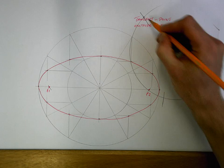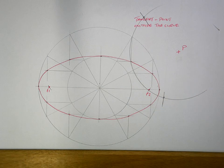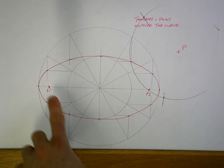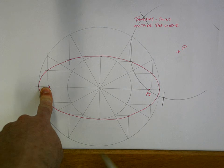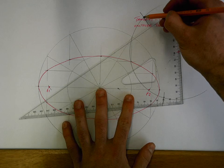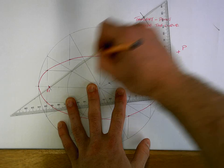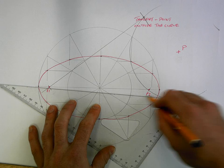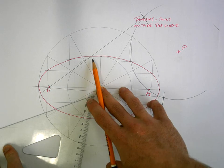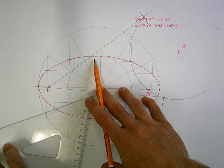Those two points are going to be joined back to the focal point that's furthest away, which is F1. And they're going to cut the ellipse. Now where they cut the ellipse is the point of contact of the tangent that we're going to draw.